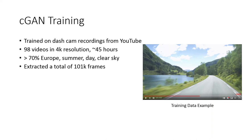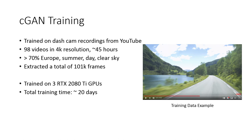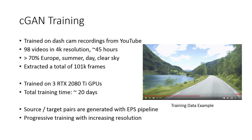To train the GAN, we first collect images from our target domain. We chose to take dashcam recordings from YouTube and collected a total of 98 high resolution videos with a total length of about 45 hours. The majority of them are filmed in Europe on summer days with clear sky, and these characteristics will reappear in our output images. Not all parts of the videos were suitable and consecutive frames are highly redundant, so we selected a total of 101,000 frames as training material. The training was performed on three RTX 2080 Ti GPUs and took about 20 days.